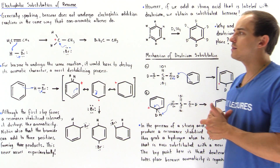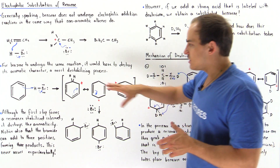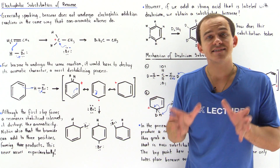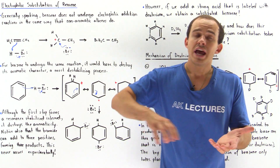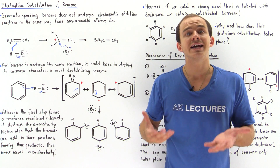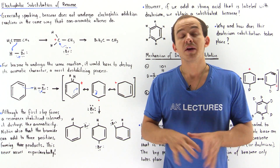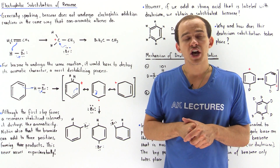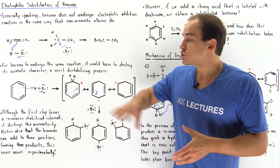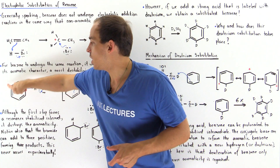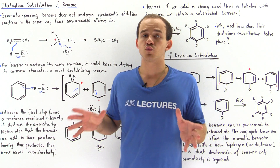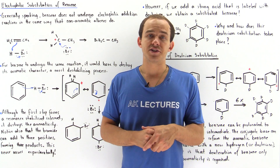The reactant benzene has aromaticity — it is fully conjugated, planar, cyclic, and obeys Hückel's rule. This means we have a large degree of delocalization of electron density among all the orbitals of the carbons in the ring, which is very stabilizing. The delocalization energy of benzene is relatively high.